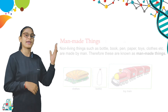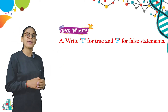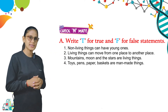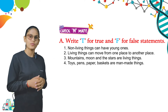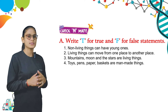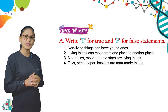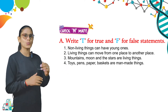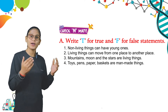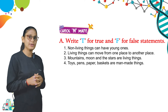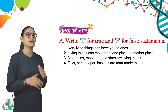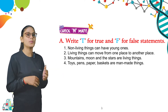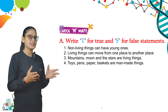Now we have a check exercise. Write T for true and F for false. First statement: non-living things can have young ones — that is false. Second: living things can move from one place to another — yes, that is true. Third: mountains, moon, and stars are living things — no, that is false. Fourth: toys, pens, paper, baskets are man-made things — yes, that is true.